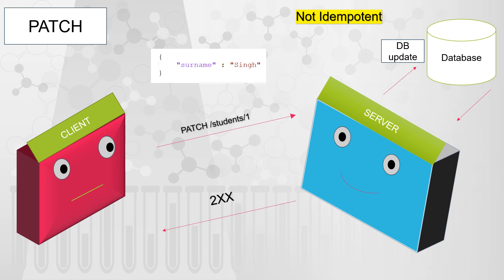One thing to note is that PATCH methods are not considered idempotent. They can be idempotent in certain scenarios — for example, updating a surname is idempotent since you get the same result every time — but PATCH can also delete attributes or change many fields, and in certain scenarios invoking the same PATCH call can result in an error back to the client. That's why PATCH is not considered idempotent, and it is not safe either because it can change the state of the resource.